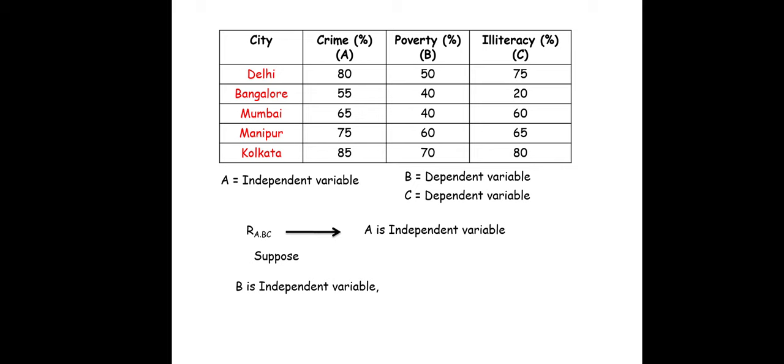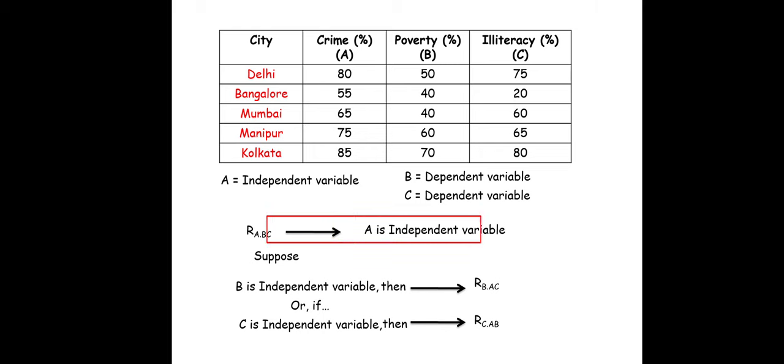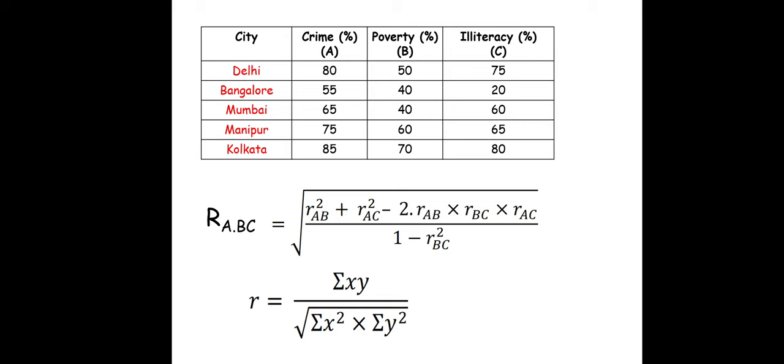If B is the independent variable, we write it as R_B.AC. If C is the independent variable, we write it as R_C.AB. In our example, A is the independent variable, so we write R_A.BC. The formula is: R²_A.BC = (r²_AB + r²_AC − 2·r_AB·r_BC·r_AC) / (1 − r²_BC). We will solve this problem using this formula.